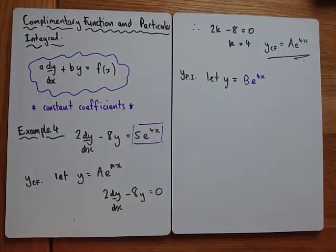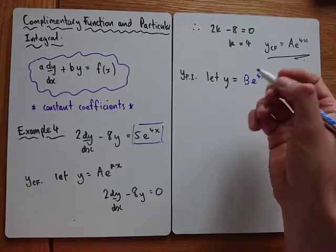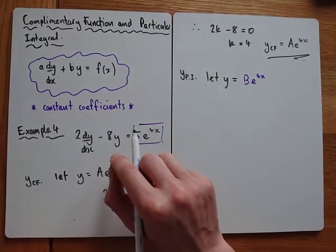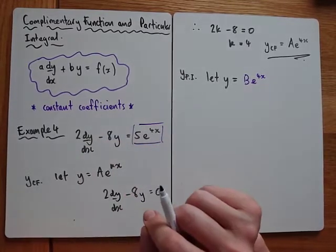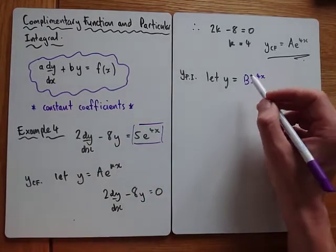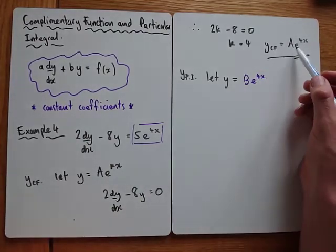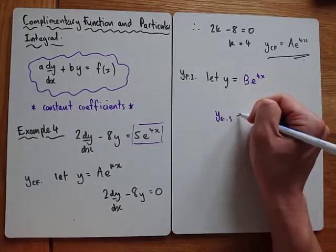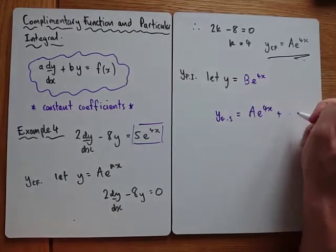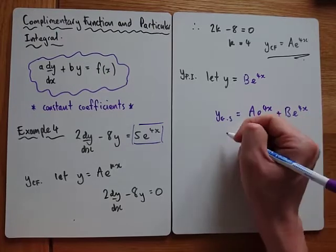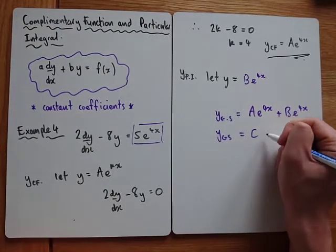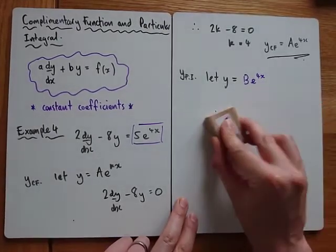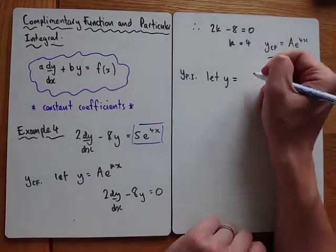A lot of people would now say let y equal B e to the 4x — you can see why, since the right hand side contains e to the 4x. But the problem is: if you did that, your general solution would just be some e to the 4x plus some more e to the 4x, which just collapses into some e to the 4x. That's not a valid general solution. Try it yourself and you'll see it simply doesn't work.